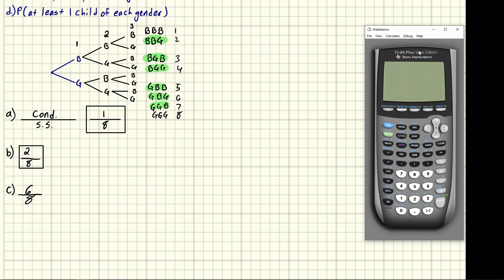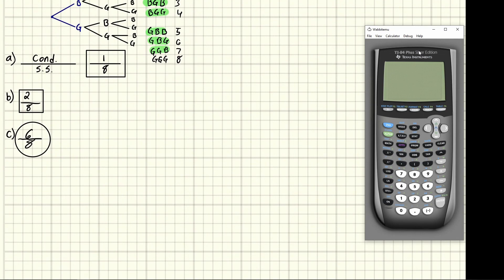Part c wants exactly two boys or two girls. Checking the list: boy-boy-girl has two boys, boy-girl-boy has two boys, girl-boy-boy has two boys, boy-girl-girl has two girls, girl-boy-girl has two girls, girl-girl-boy has two girls. That's six scenarios out of eight total, giving six-eighths.